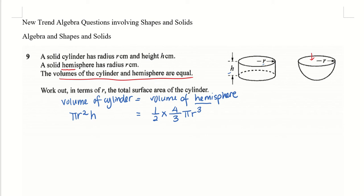They asked me to work out the total surface area of the cylinder in terms of r. I can't get to the question directly yet, so let me simplify this expression. I notice I have h here — the purpose of this information is to express h in terms of r.